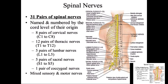There are 31 pairs of spinal nerves: eight cervical, twelve thoracic, five lumbar, five sacral, and one pair of coccygeal nerves. I'm going to pause here and make a second video just on these plexus.